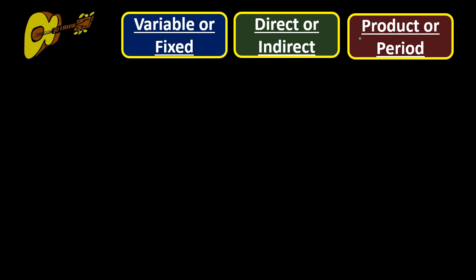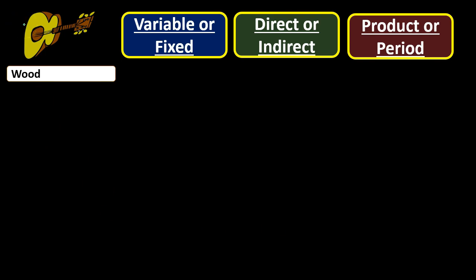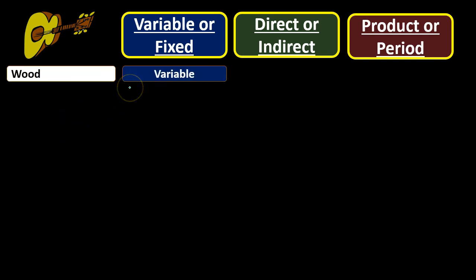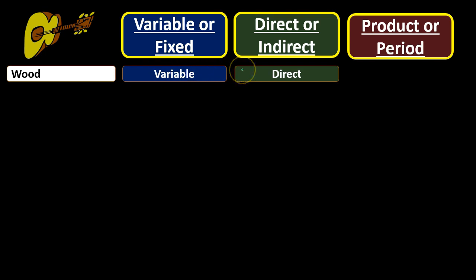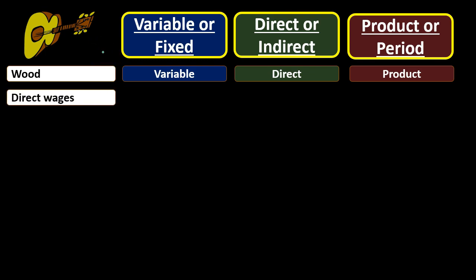Let's look at wood — we're going to make guitars. Wood is typically going to be variable because every time we make a new guitar we have a corresponding increase in wood cost. It's going to be direct because if we're making custom guitars, we would know exactly which guitar that wood goes to — we can assign it directly. And it's clearly a product cost because the wood is going into the production of the guitar.